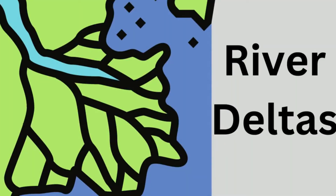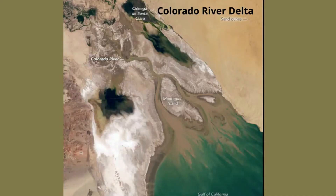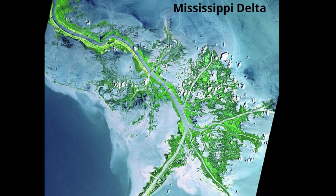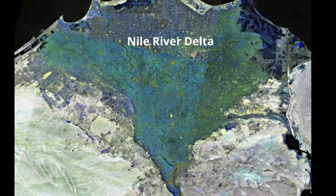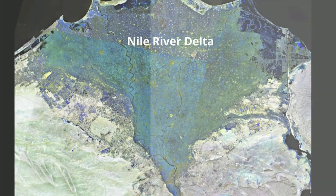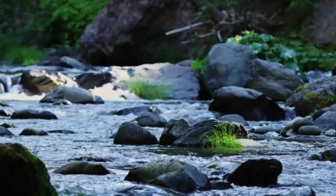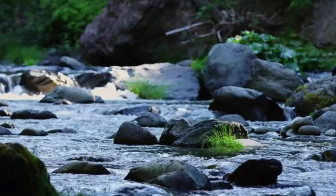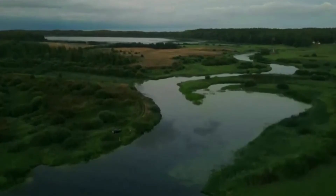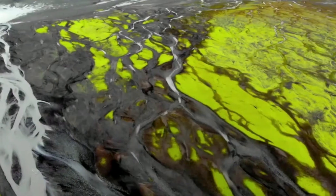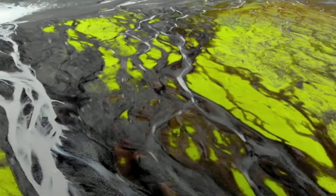Here are a couple of famous river deltas: the Colorado River delta, the Mississippi River delta, and the Nile River delta. In summary, deltas form when rivers pick up sediment caused by weathering and erosion. The river slows down when it enters a body of water, and this may create landforms, sometimes shaped like a triangle.